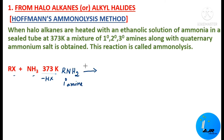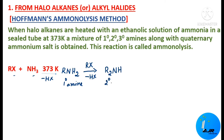When this primary amine is again treated with an alkyl halide, HX is removed again — the halogen X and one hydrogen from the primary amine leave as HX. The additional R group adds to R-NH2, and we get a secondary amine, R2NH.